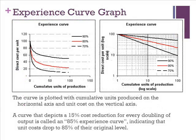Here we have attached an actual experience curve graph to show you what it physically looks like. On the horizontal axis it shows the cumulative units of production, whereas on the vertical axis it shows the direct cost per unit.